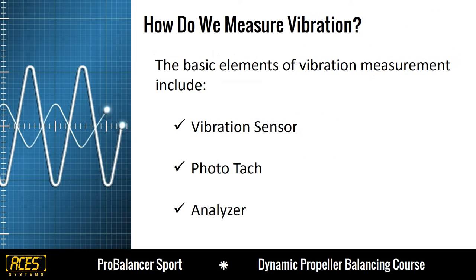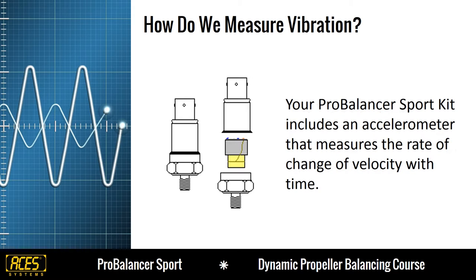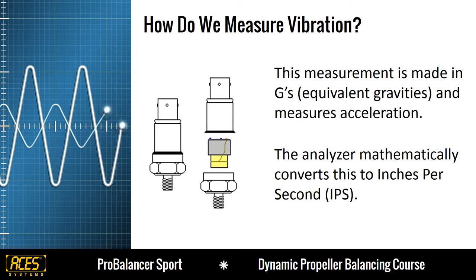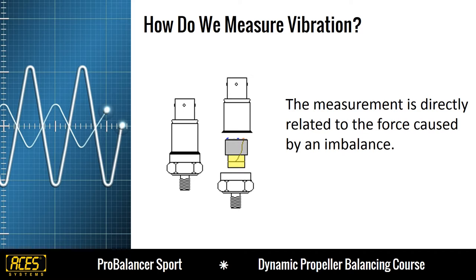Let's talk now about how we can measure vibration using a vibration sensor, photo-tac, and analyzer. The vibration sensor generates a small voltage when mass compresses the piezoelectric element. Your ProBalancer Sport kit includes an accelerometer that measures the rate of change of velocity with time. This measurement is made in g's, or equivalent gravities, and measures acceleration. The analyzer mathematically converts this to inches per second, or IPS. We use this type of sensor because it is more sensitive to higher frequencies, and the measurement is directly related to the force caused by an imbalance.